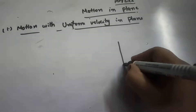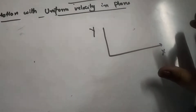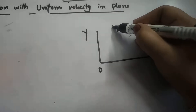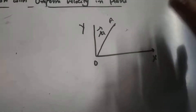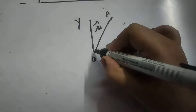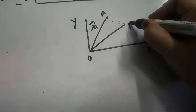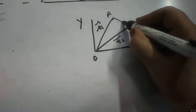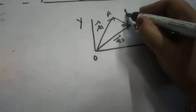Let us consider we are having two coordinate axes, x and y, since we are talking about a particle moving in a plane. Let O be the origin. Initially the particle is at position A having position vector R1, and after time T2 — it was at time T1 at A and at time T2 it reaches B having position vector R2. In that case, AB will represent the displacement vector, which is given by R2 minus R1.